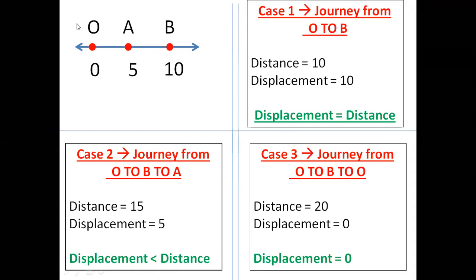Focus on case 3. Journey from O to B and back to O — it started from O, went to B, and came back again to the same position O. Starting and ending point is the same. Distance is 20, that is 10 plus 10. Displacement is 0. So the conclusion is displacement is equal to 0. We have three cases: displacement is equal to distance, displacement is less than distance, and displacement is 0.